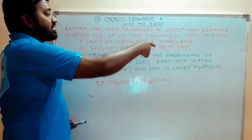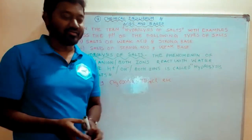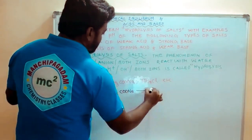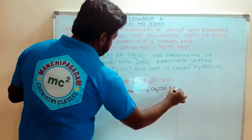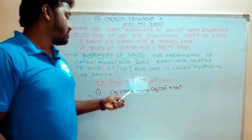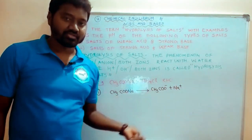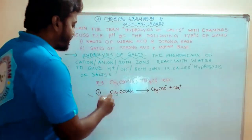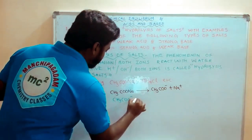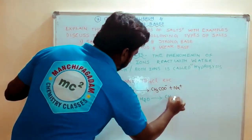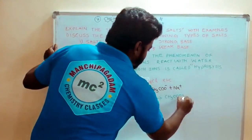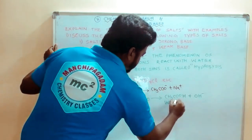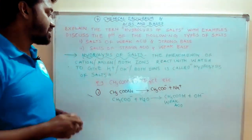Salts of weak acid and strong base. Example is CH3COONA. CH3COONA gives CH3COO- plus Na+. CH3COO- is from weak acid. Solutions will increase in OH-.